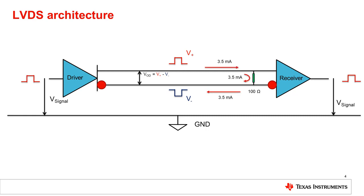The driver is typically a 3.5 milliamp current source that generates a 350 millivolt swing signal centered around 1.2 volts when terminated with 100 ohms at the receiver.